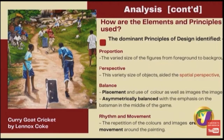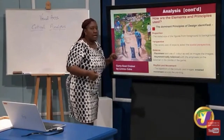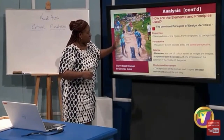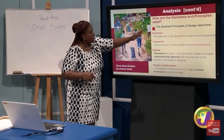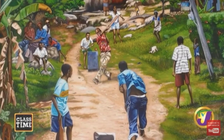Rhythm and movement — not just music has rhythm and movement; art does too, through repetition. Look at what the road is doing: it's larger here and gets smaller as it moves to the back, taking your eyes into the artwork from foreground to background. The figures are placed progressively smaller, and the repetition of color helps create rhythm and movement in the artwork. That concludes the Analysis.